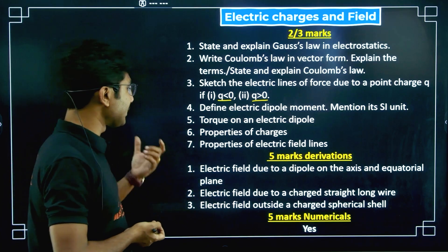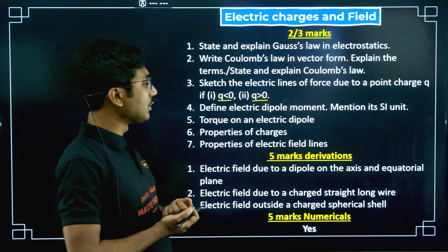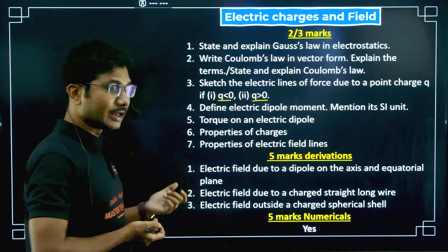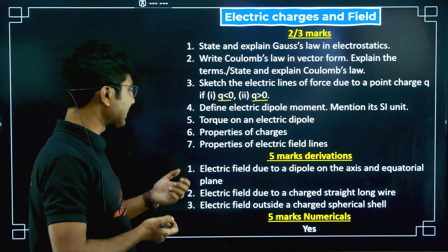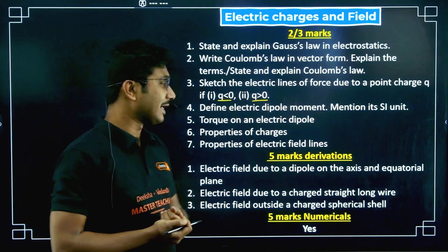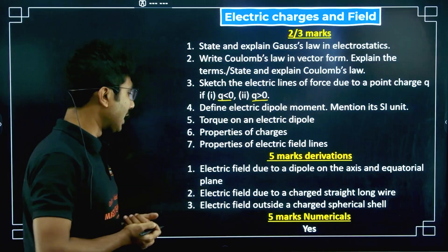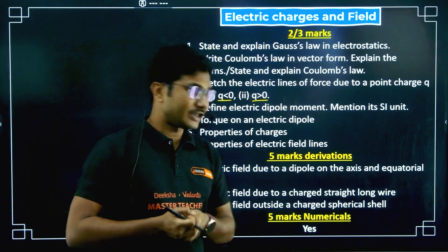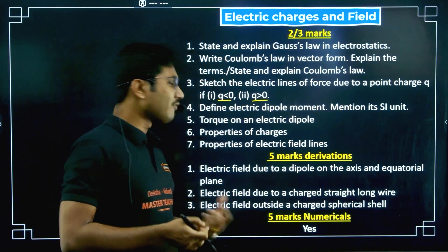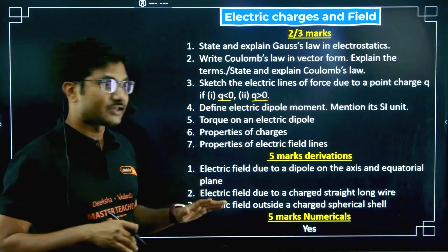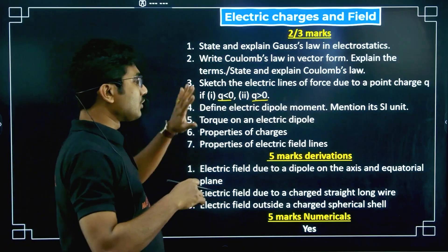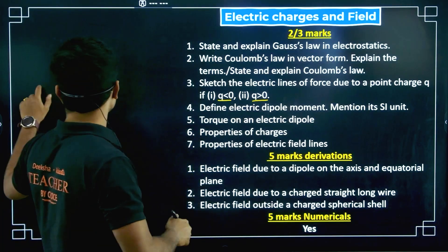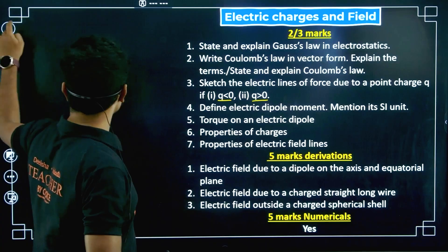From this chapter, five-mark derivations are possible: electric field due to a dipole on the axis and on the equatorial plane, electric field due to a long straight charged wire, and electric field outside a charged spherical shell. Five-mark numerical questions will also come from this chapter, so you have to practice both five-mark derivations and numericals from this chapter.